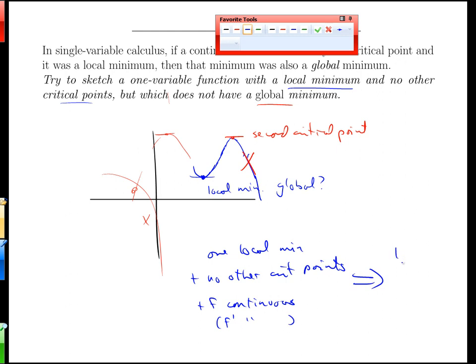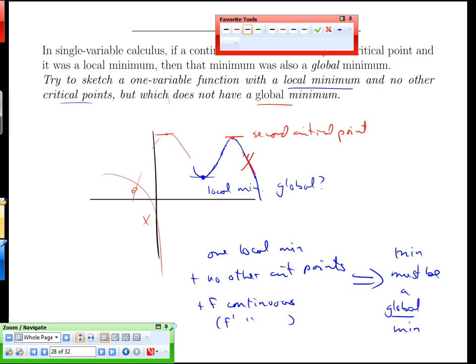No other critical points. And let's add the condition. The function is continuous. And we'll add this extra condition. The derivative should be continuous as well. That min also has to be a global minimum. I want to contrast that with the example that we were just looking at with multivariate functions.